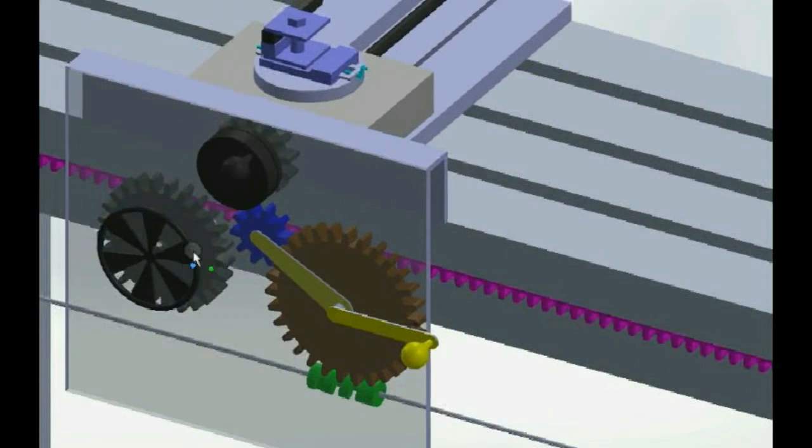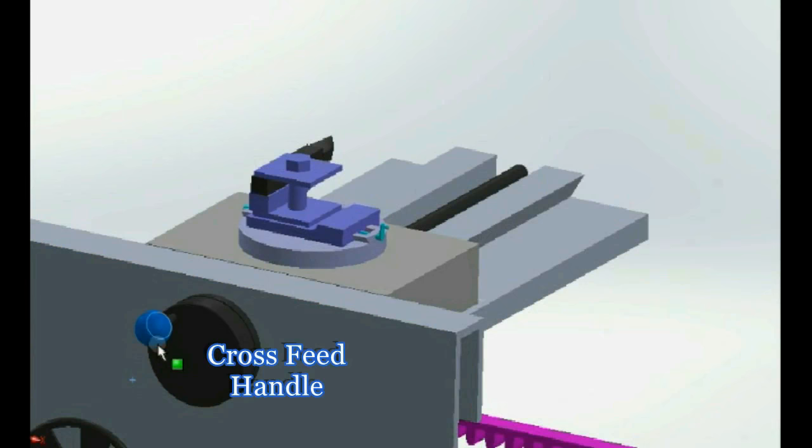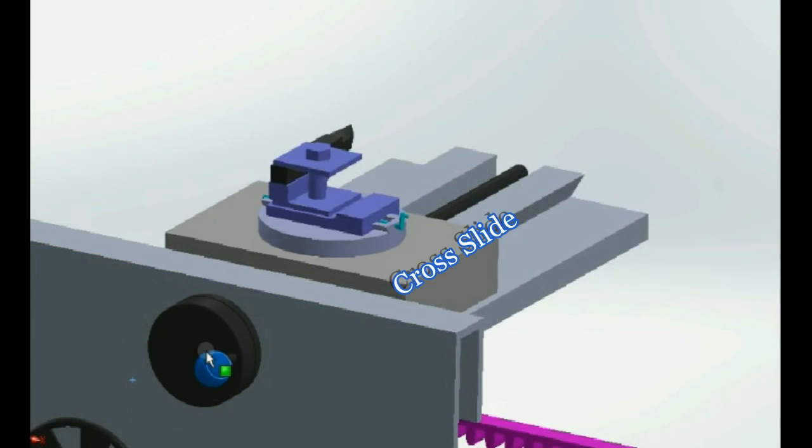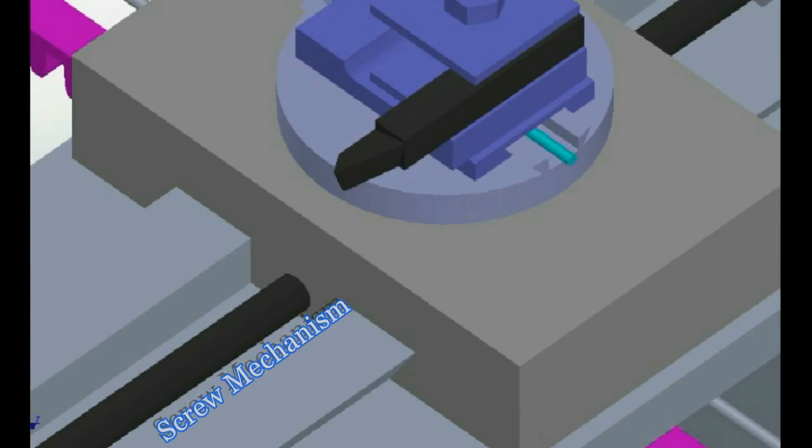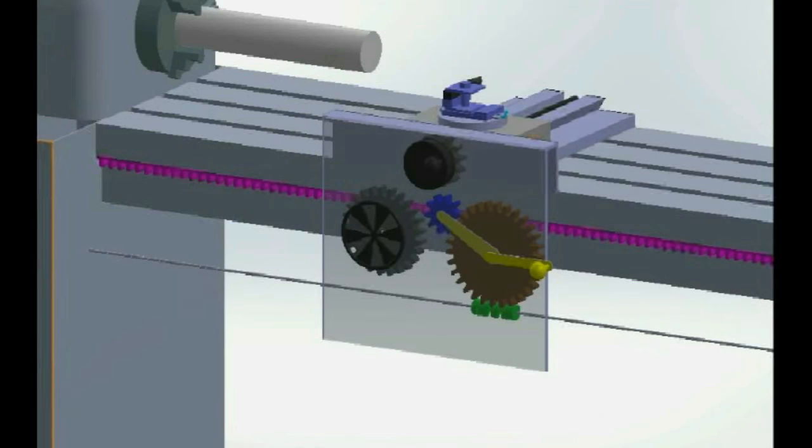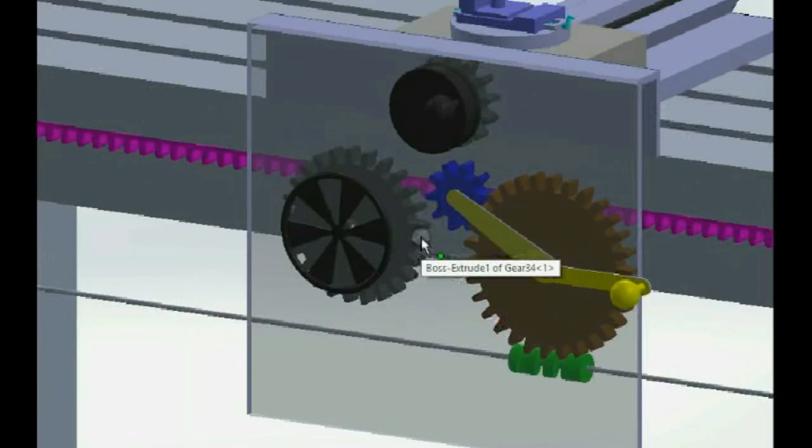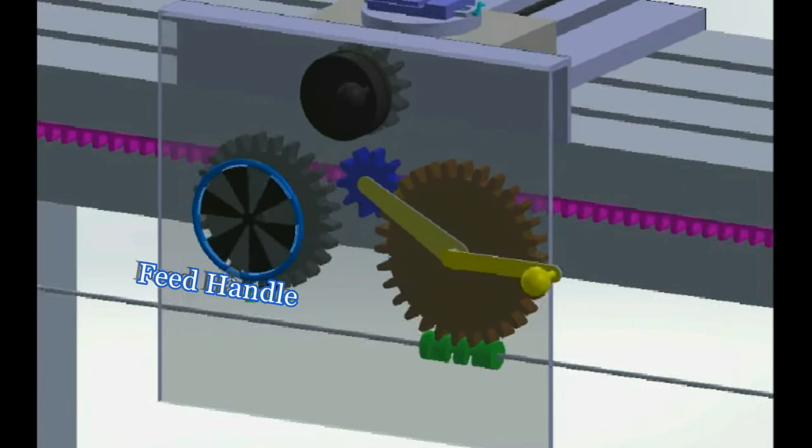On rotating the cross feed handle, the cross slide moves back and forth on the saddle because of the screw mechanism that connects the handle with the slide. Similarly, there is a handle for feed motion too.